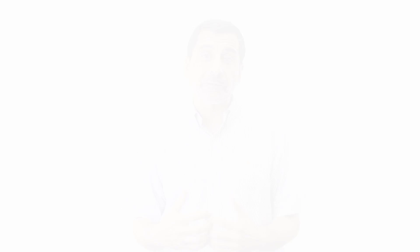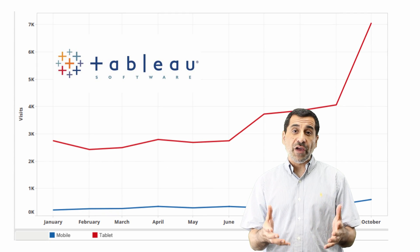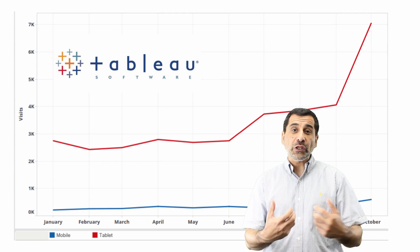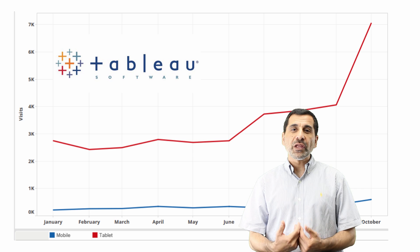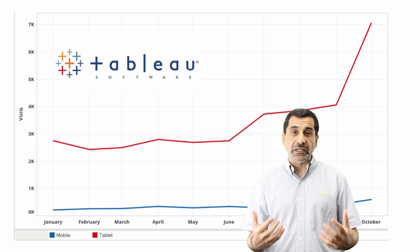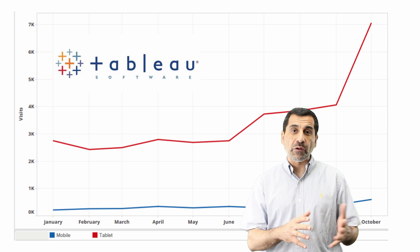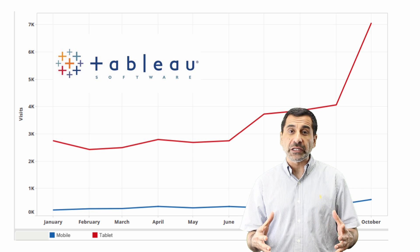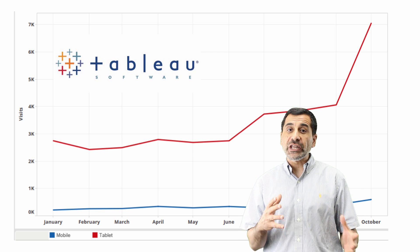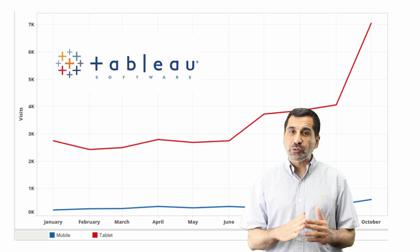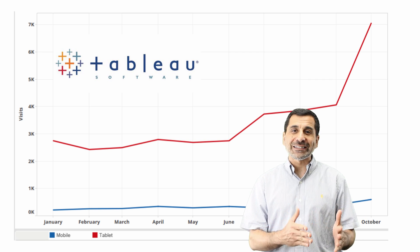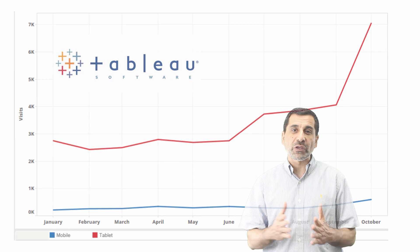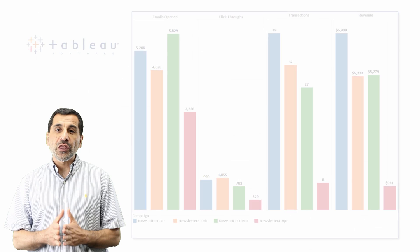Not only that, you can also segment by mobile and desktop to see how your mobile engagement is performing. This chart that you're looking at — we've actually pulled the data into Tableau from Google Analytics using the GA connector now available with Tableau 8. You can easily trend your data and slice it every which way you like.